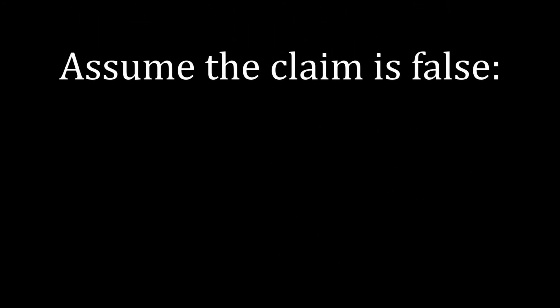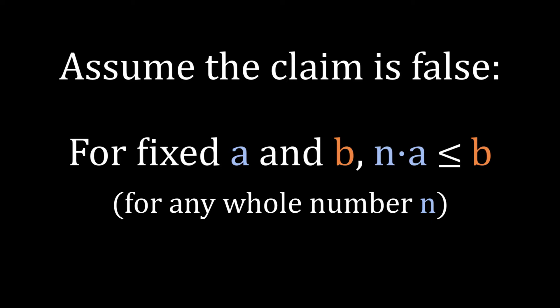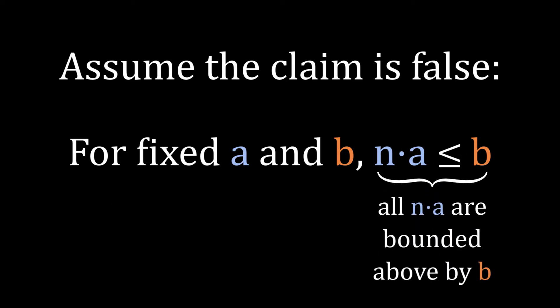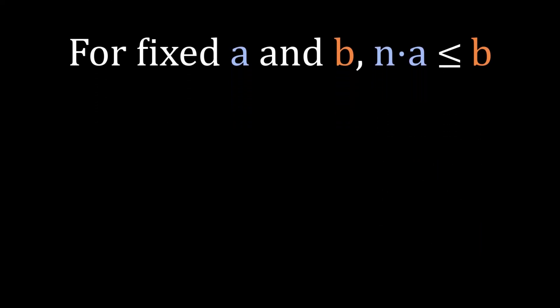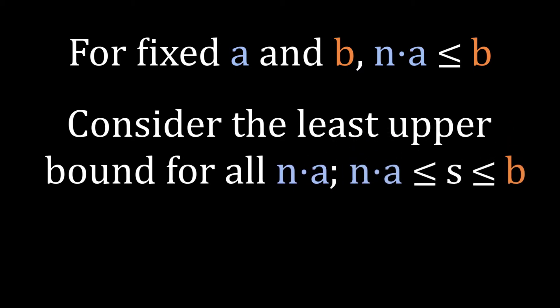First, assume the claim is false. For fixed values of A and B, no such whole number exists. NA is less than or equal to B for every N. Then you can say that all these NA are bounded above by B, meaning they will never exceed B. But then it should also be true that there's some other number that bounds the NA from above with as little tolerance as possible, perhaps more strictly than B does. We'll call it S for easier reference. See where this is going?